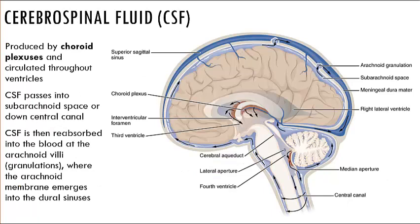Cerebrospinal fluid is produced in the choroid plexus and circulates through the four ventricles of the brain: two lateral ventricles (right and left), each within one cerebral hemisphere; the third ventricle in the diencephalon; and the fourth ventricle, which begins in the mesencephalon and extends into the superior portion of the medulla oblongata, then narrows and becomes continuous with the central canal of the spinal cord. CSF is ultimately reabsorbed into the blood where the arachnoid membrane emerges into the dural sinuses.